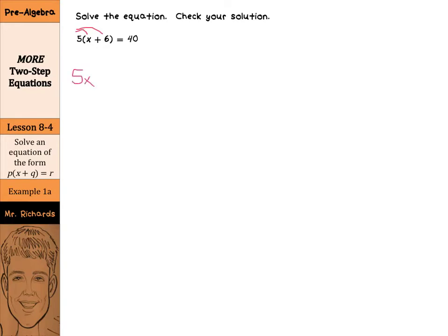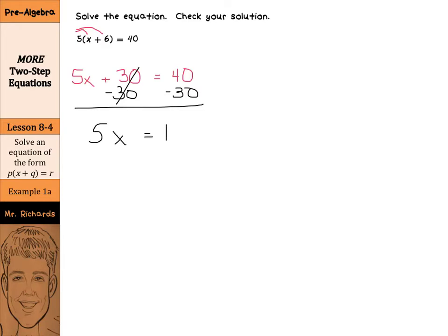If you do distribute, this is 5x plus 30 equals 40. Subtract 30 from both sides, and you're left with 5x equals 10. Then divide by 5, and x equals 2.